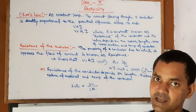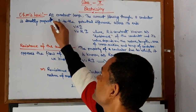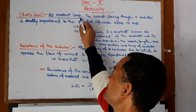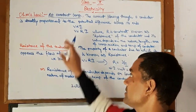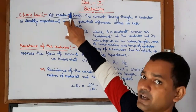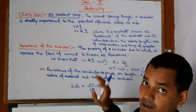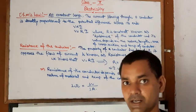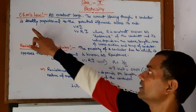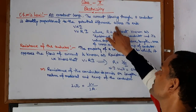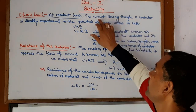What do you know about Ohm's Law? The compulsory condition is at constant temperature. If temperature is not constant, this law will not be proved — you should understand this first. The law states: the current flowing through a conductor is directly proportional to the potential difference across its ends.